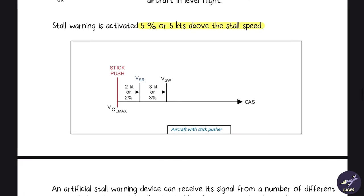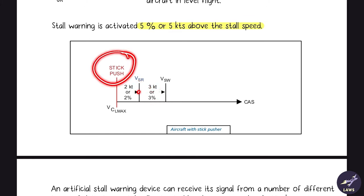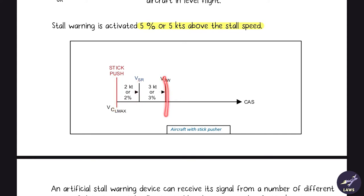In aircraft with a stick pusher: the stick shaker warning activates at three knots or three percent above stall speed, and the stick pusher activates at two knots or two percent below the actual stall speed. So stick shaker is three knots above stall speed and stick pusher is two knots below stall speed.